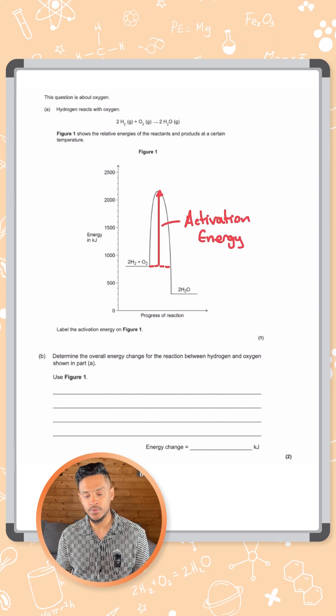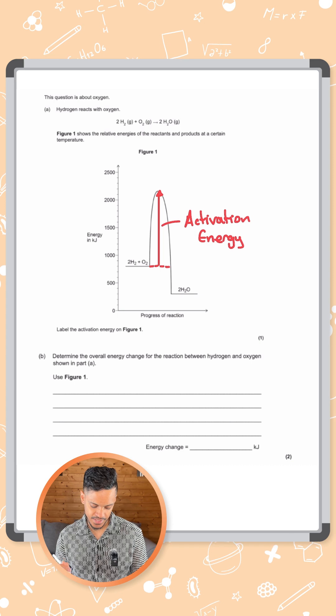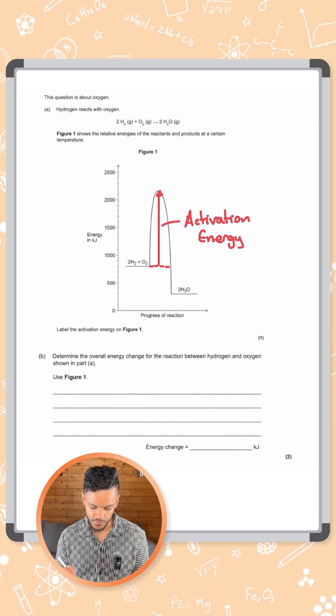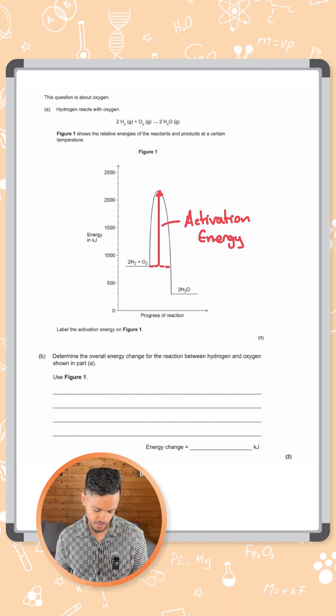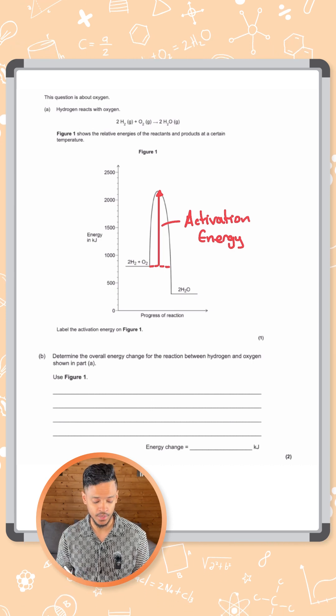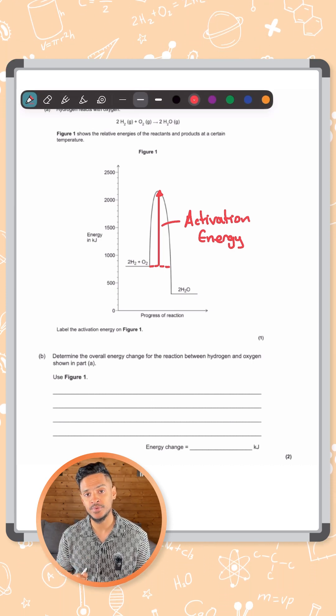Now for the second part, it says determine the overall energy change for the reaction between hydrogen and oxygen shown in part A, and it says to use figure one. Here we actually need to use some numbers.